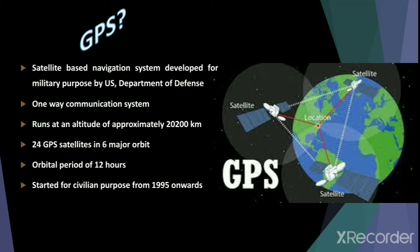A GPS is a network of satellites that continuously transmit coded information, which makes it possible to precisely identify a location on the Earth by measuring the distance from the satellites. Simply, you can term GPS, or a Global Positioning System, as a satellite-based navigation system developed for military purposes by the United States Department of Defense. GPS is a one-way communication system. It runs at an altitude of approximately 20,200 kilometers. There are 24 GPS satellites orbiting the Earth in six major orbits.